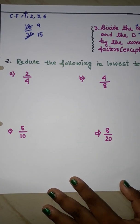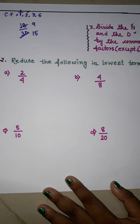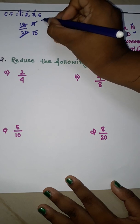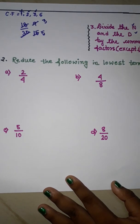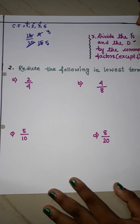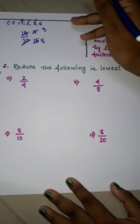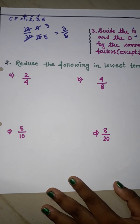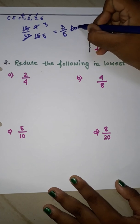Now the numbers are 9 and 15. We will divide by 3 next, since we already divided by 2. When we divide 9 by 3, we get 3, and when we divide 15 by 3, we get 5. 3 and 5 cannot be divided by any common number, so the answer is 3/5. This is the reduced form of 18/30.